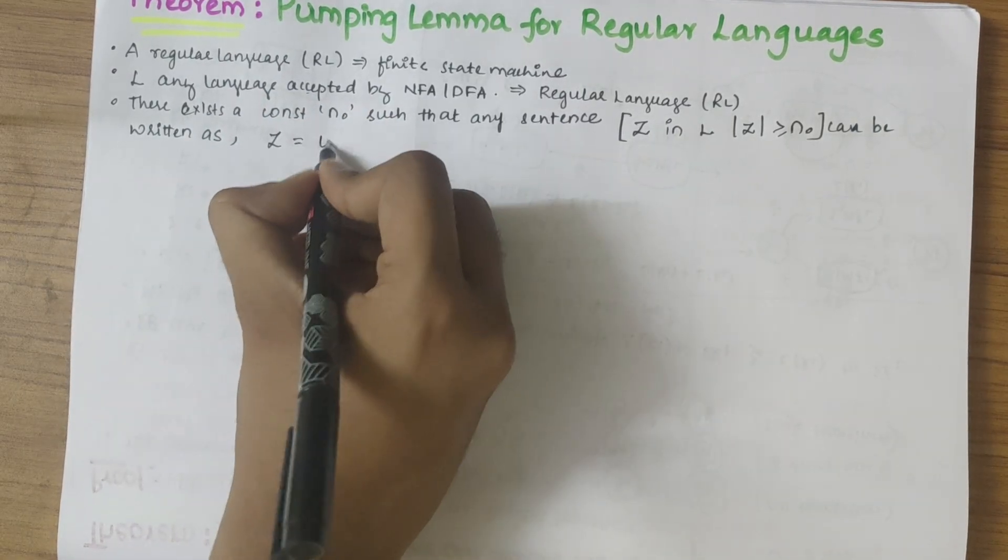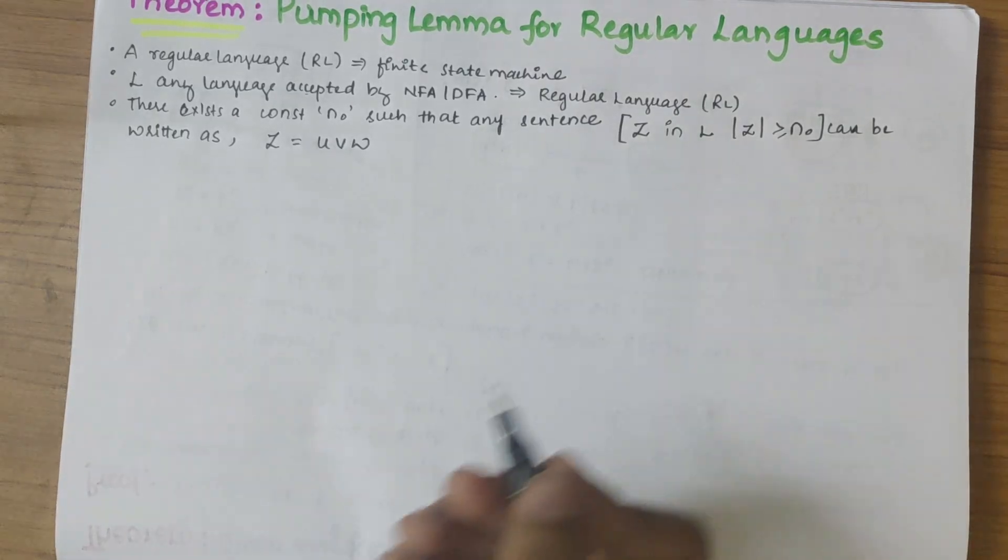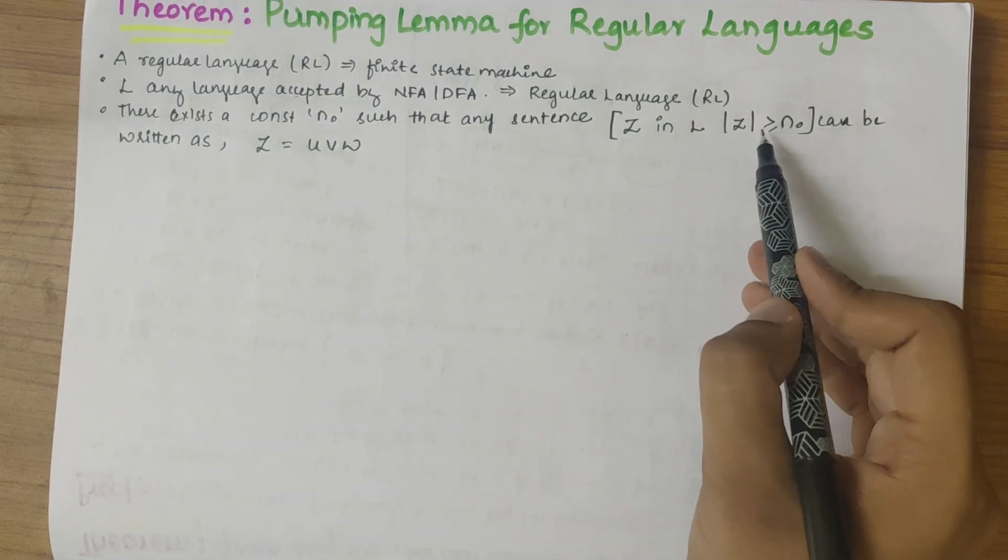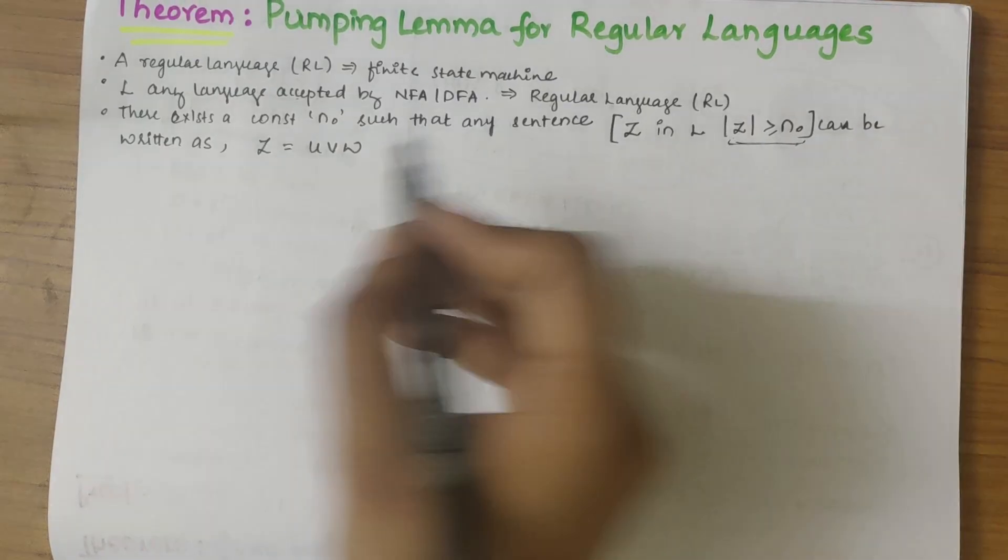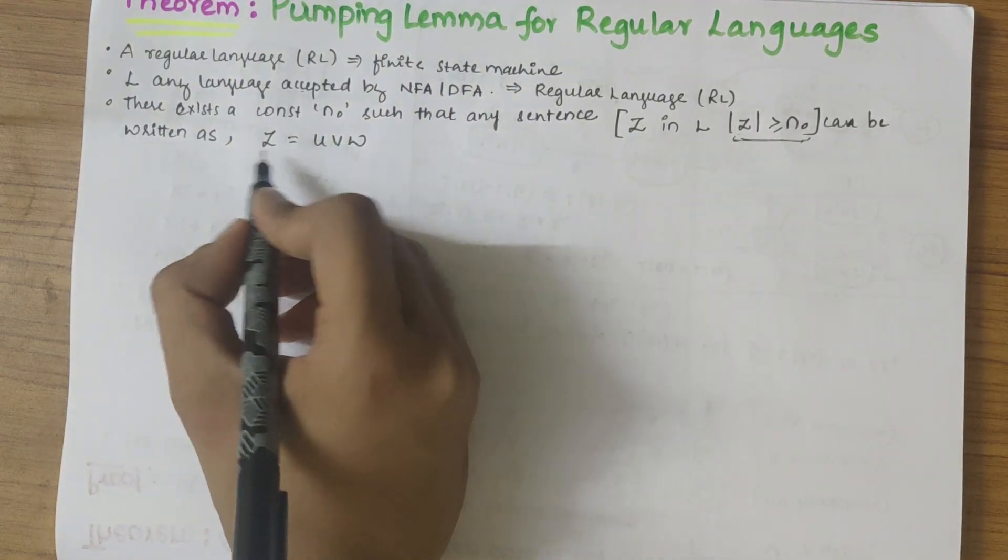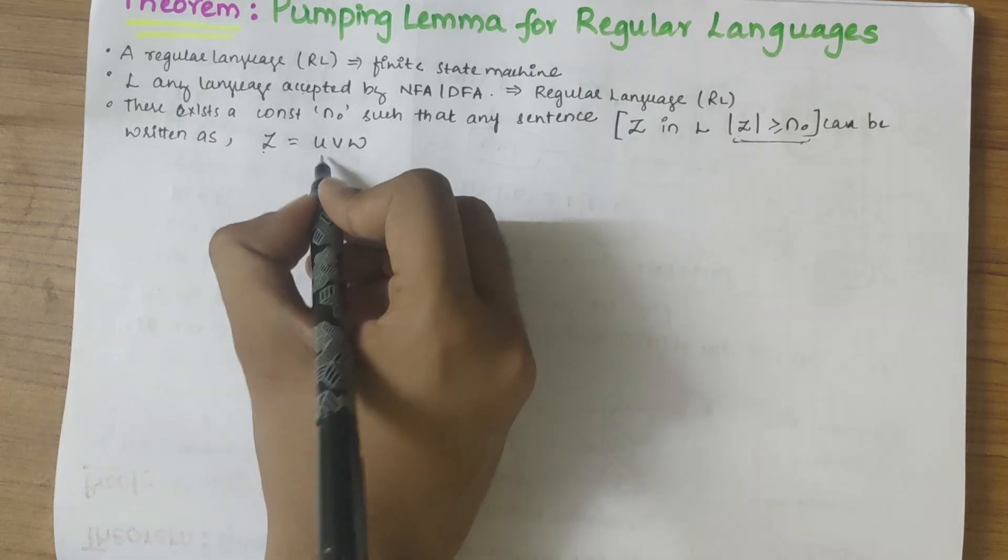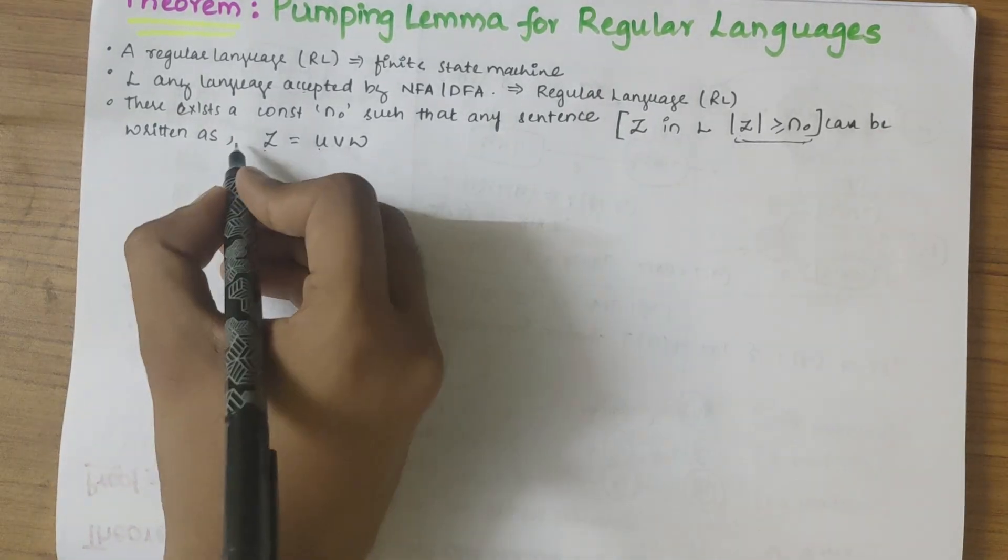So here the first condition is z can be written as u v w. The length of string must be greater than the constant n. Then here we divide the z into equal parts, that is u, v, and w.